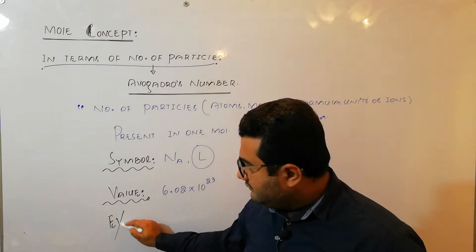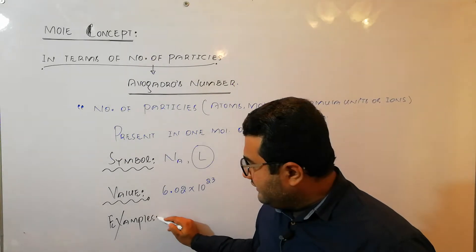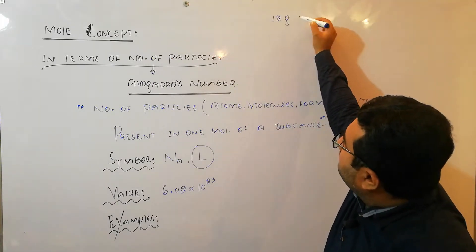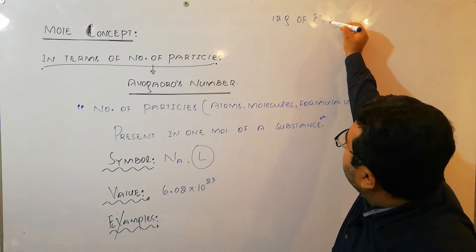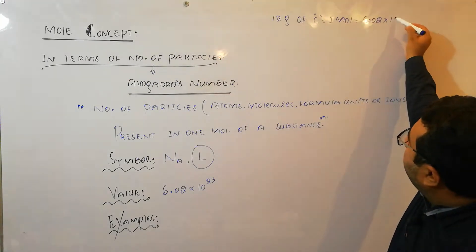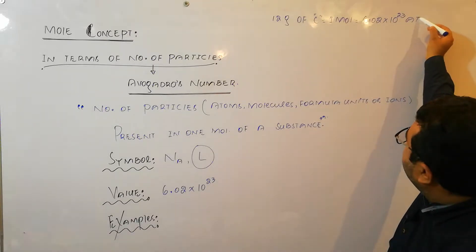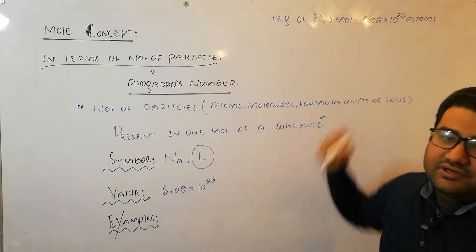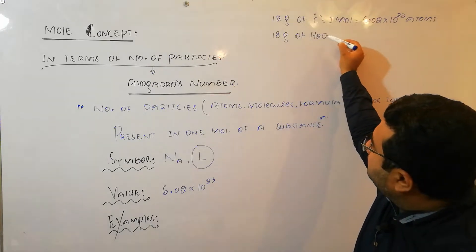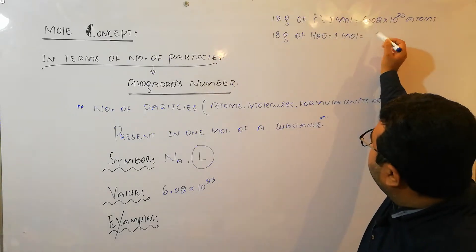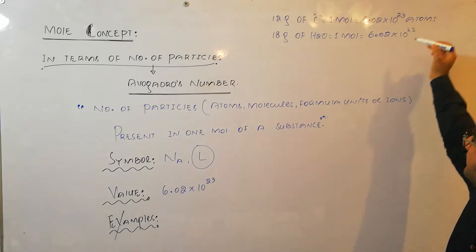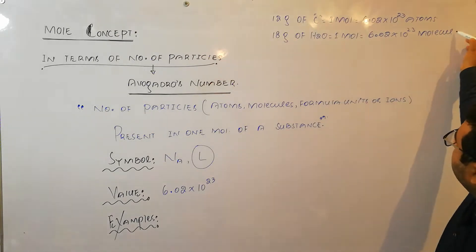Let us discuss some examples related to Avogadro's number. When we say we have 12 grams of carbon, that is equal to one mole and it is equal to 6.02 × 10²³ atoms, because it is an element so it consists of atoms. 18 grams of water is equal to 1 mole and that also has 6.02 × 10²³, but not atoms — rather molecules.